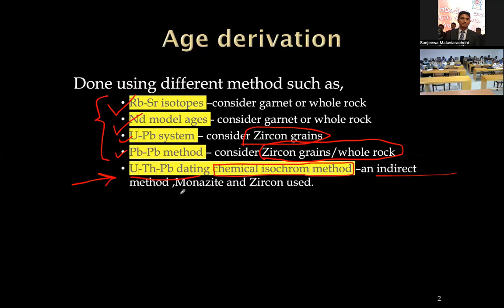For the chemical isochron method, you have to do some additional processing to get the age, so it is an indirect method. Monazite is the most famous mineral used for this chemical isochron method, and it has also been applied to Sri Lankan rocks. These are the different methods used for isotopic age determination in Sri Lankan rocks.